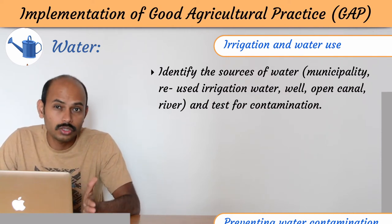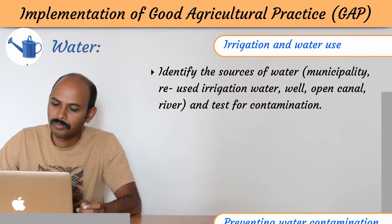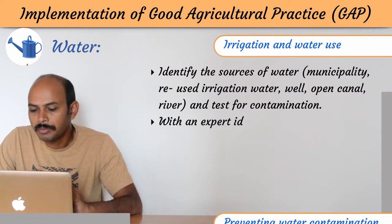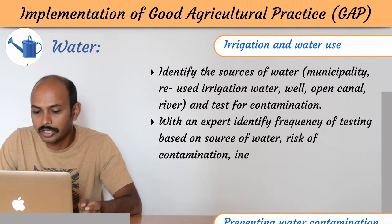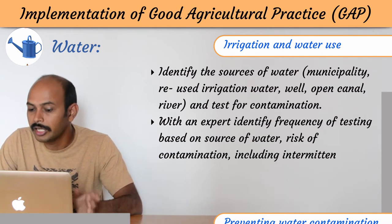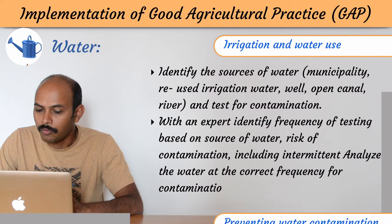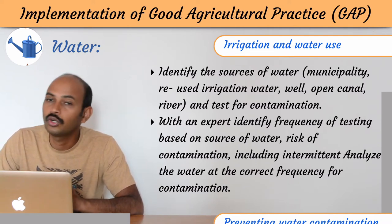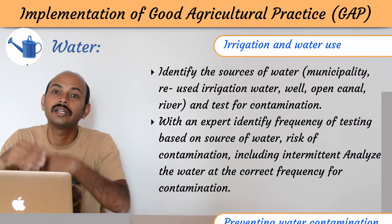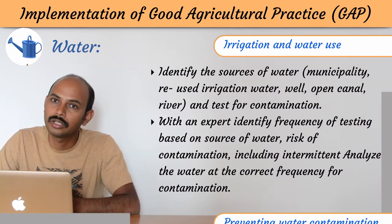First of all, whatever is the water source, you must test it for contamination. With an expert, identify the frequency of testing based on the source of water and risk of contamination, including intermittent analysis of water at the correct frequency. It should not be done only once — it should be done repeatedly depending upon the source of water.